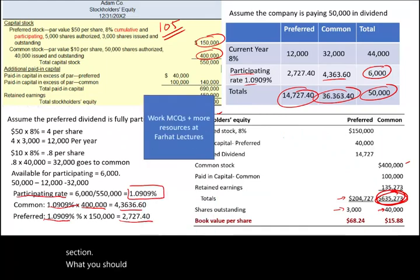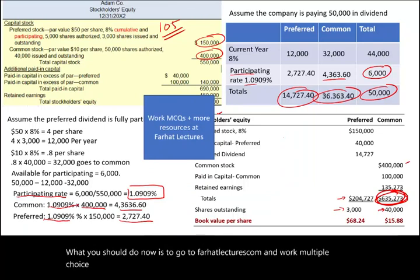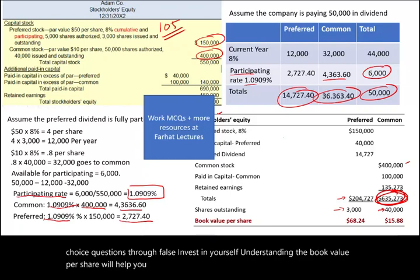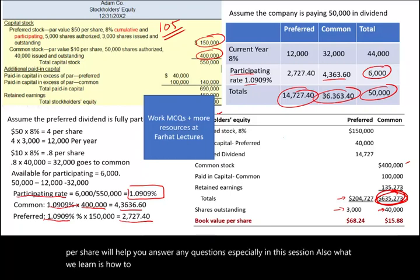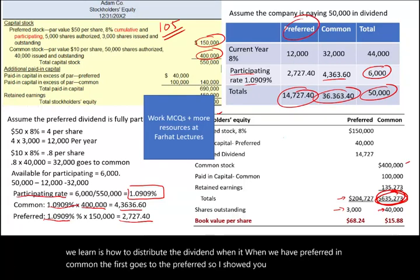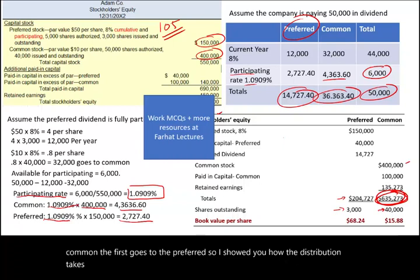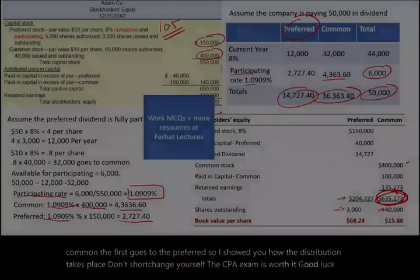Go to farhatlectures.com and work multiple choice and true/false questions — invest in yourself. Understanding book value per share helps you answer exam questions, and in this session we also learned how to distribute dividends when you have preferred and common stock — preferred gets paid first. Don't shortchange yourself; the CPA exam is worth it. Good luck, study hard, and stay safe.